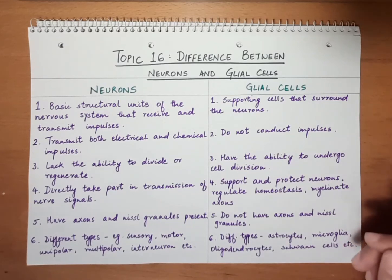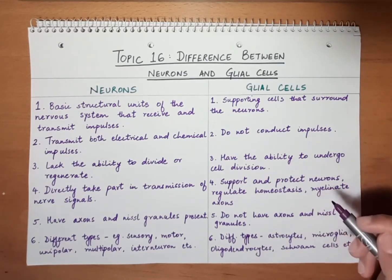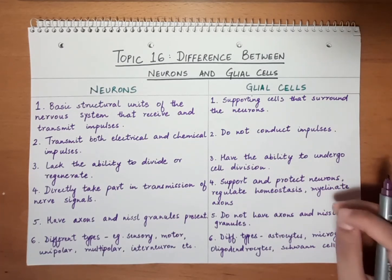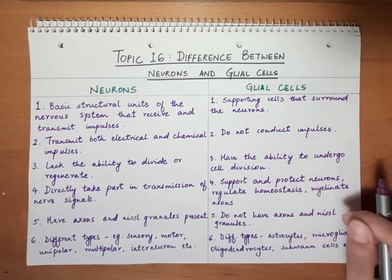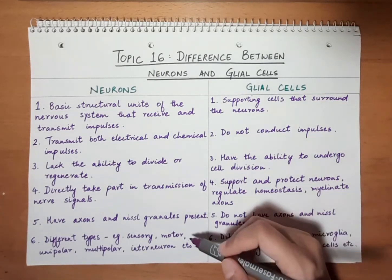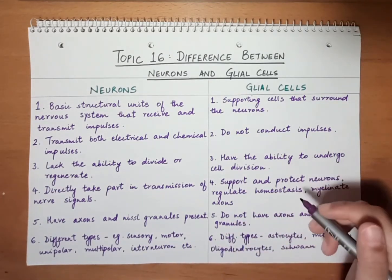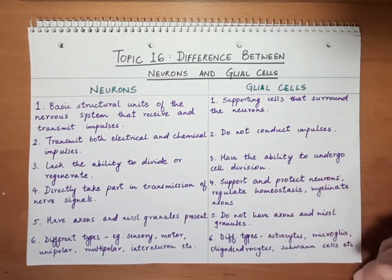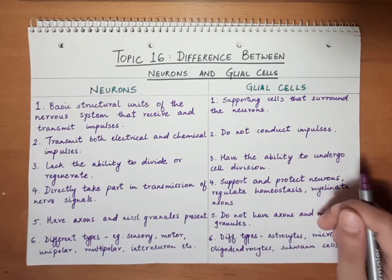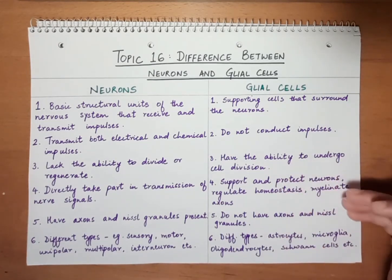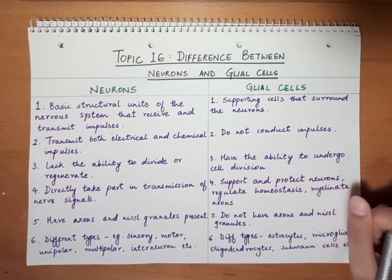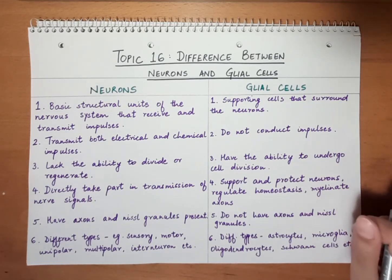To learn more about the different functions of glial cells, please refer to the other videos where I explain in more detail the structure and function of glial cells in the central nervous system and peripheral nervous system, and also the classification of neurons. These were the basic differences between neurons and glial cells which can be asked in exams, covering their functional and structural differences. Thank you very much for watching — if you like the video please hit the like button and subscribe to my channel.